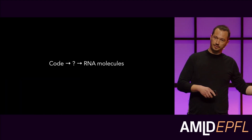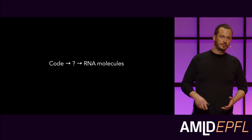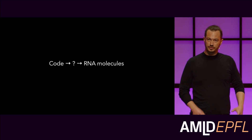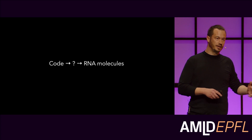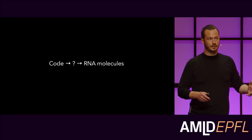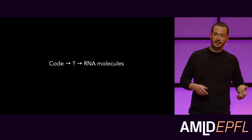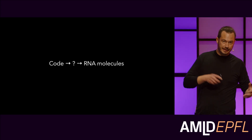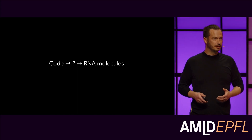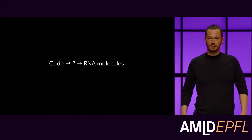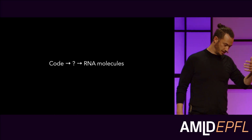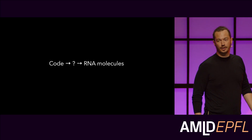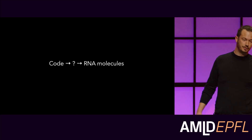In our case, we want to build a process or chain of tools into which you can similarly input specifications that describe the intended behavior of a piece of biological software, and the output of this process should be RNA molecules — molecules that actually exhibit the desired behavior when they are inside human cells.